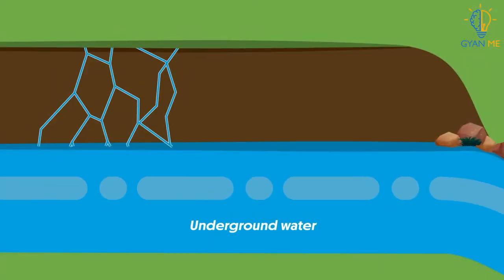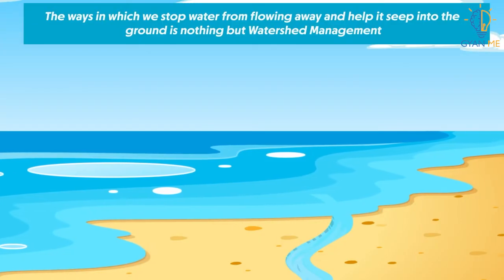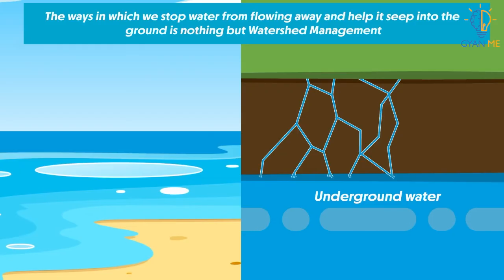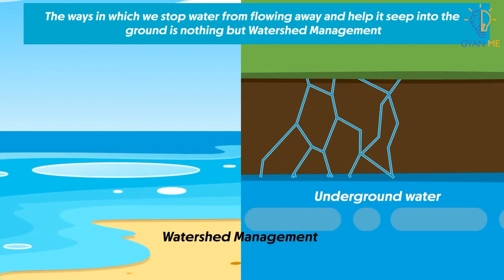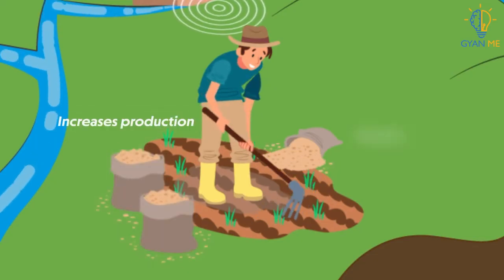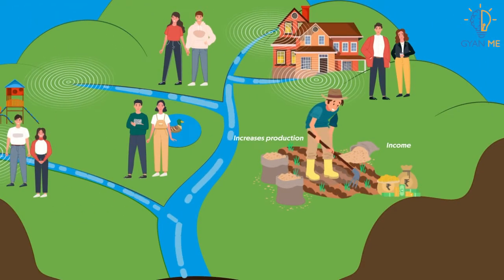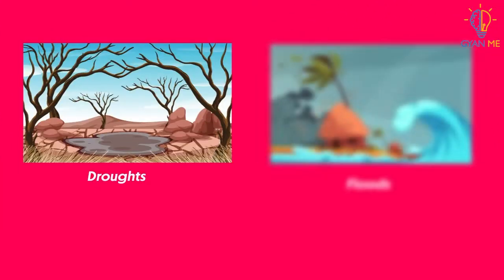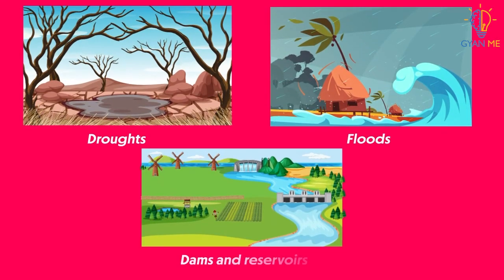Also, water stored in the ground will not be polluted by effluents and chemicals the way river water does. The ways in which we stop water from flowing away and manage these areas of land to help this water seep into the ground is nothing but watershed management. Watershed management not only increases the production and income of the watershed community, but also mitigates droughts and floods in these areas. It also increases the life of downstream dams and reservoirs.